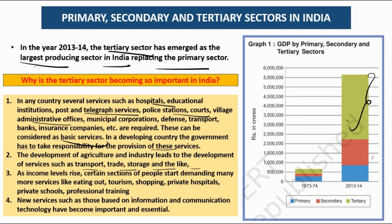As income levels rise, certain sections of people start demanding more services — eating out, tourism, entertainment. People go out for movies, shopping, drawing classes, guitar sessions. New services based on information technology also started emerging around 2010–11. These are the reasons why the tertiary sector is growing rapidly.